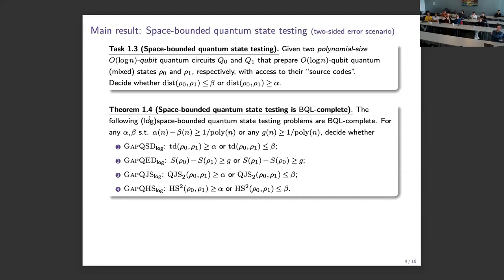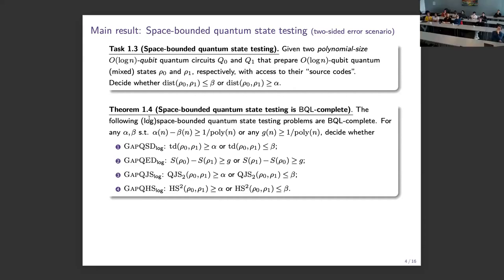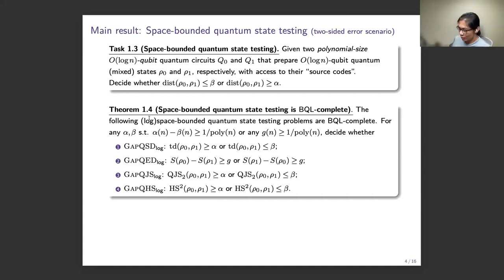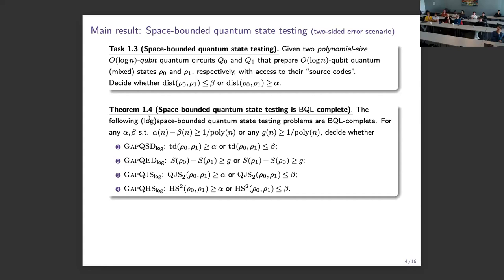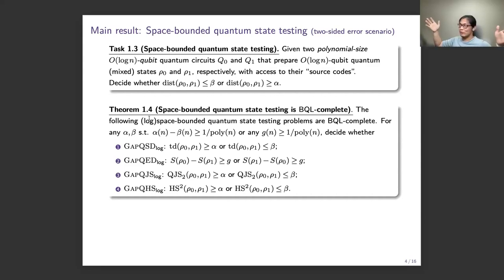There's a question about why circuits are polynomial-sized. We are talking about log-space computation. The computational model is like a Turing machine with a read-only input tape of polynomial length. So we define circuits of polynomial size. Also, every unitary on log-n qubits can be implemented with poly-many gates, which provides further justification.